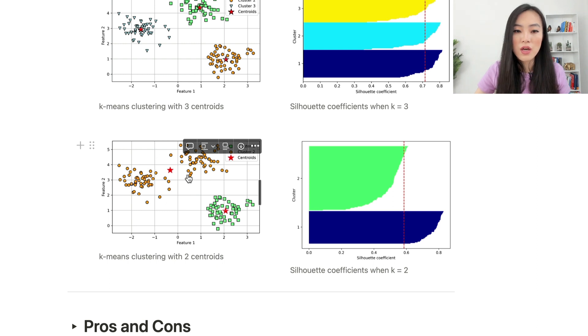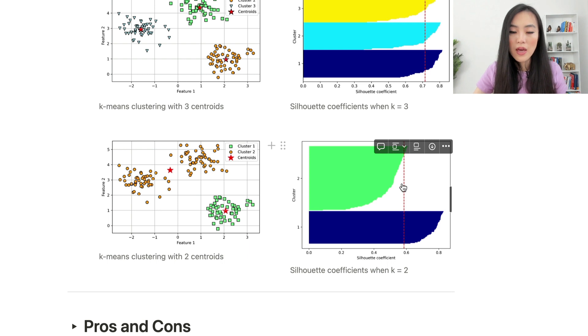Now if we choose two centroids instead of three for this particular dataset, the clustering result is less than ideal because it seems that there should be two clusters here instead of one. We can plot the silhouette coefficients when K equals two, and in this case one cluster, I believe is cluster two, has a coefficient less than 0.6 and the coefficient is much less than the coefficient of the other cluster. This indicates that K equals two is probably not a good option for this particular dataset. Now we have covered two common methods to choose K for the K-means algorithm.